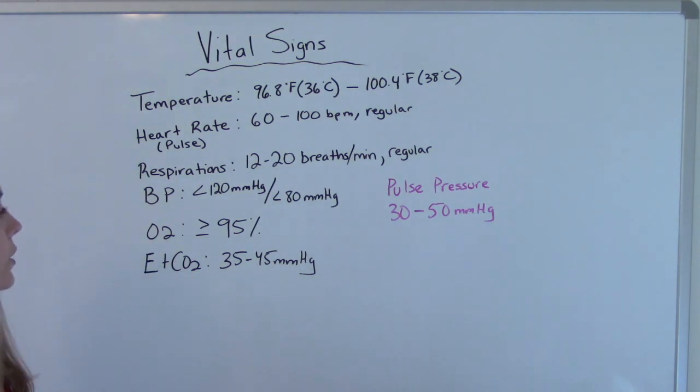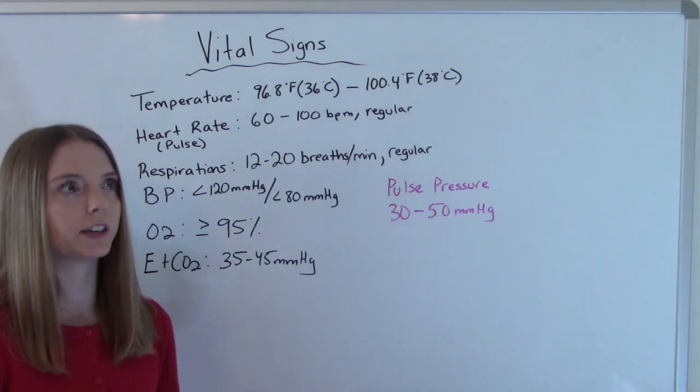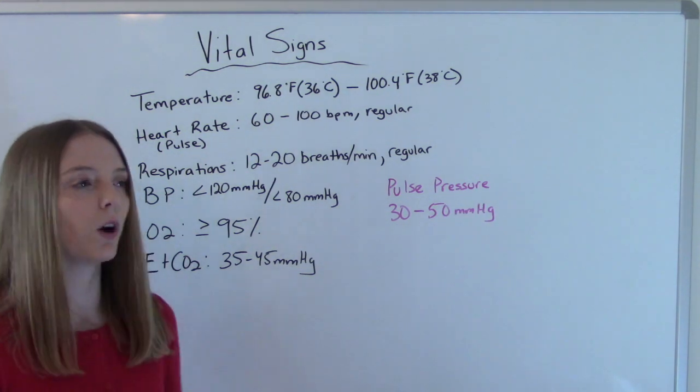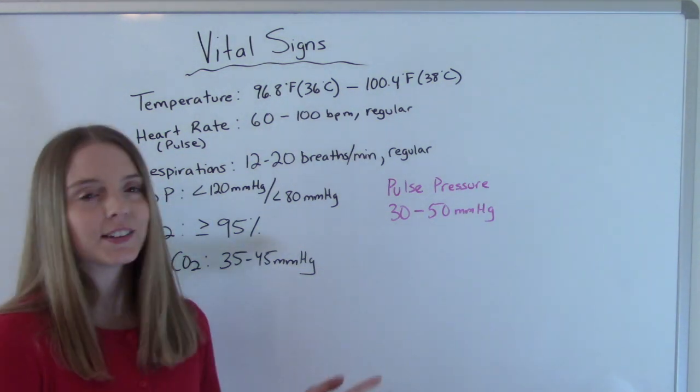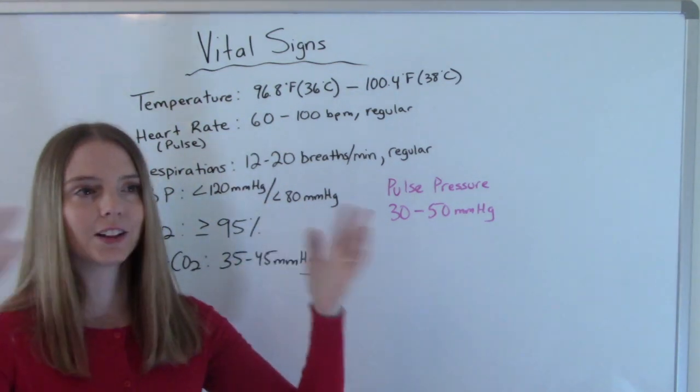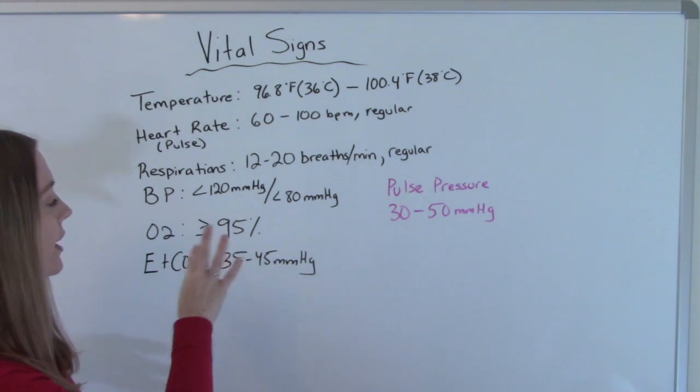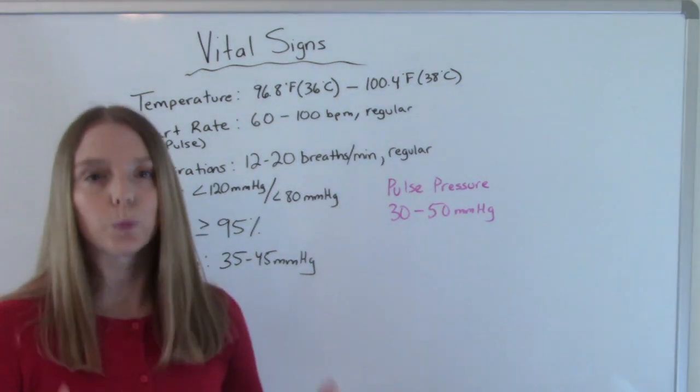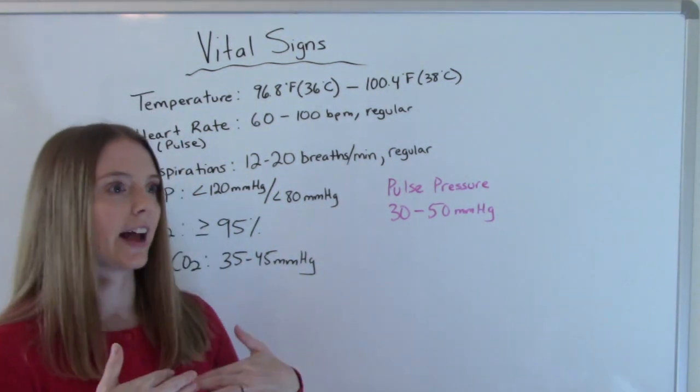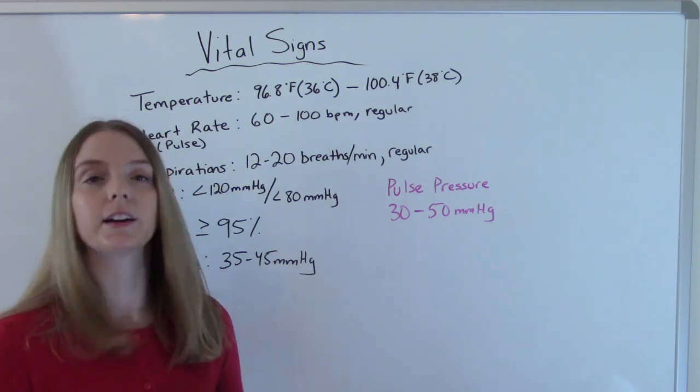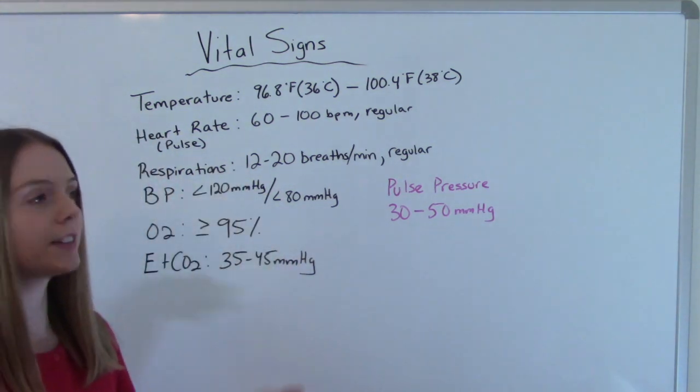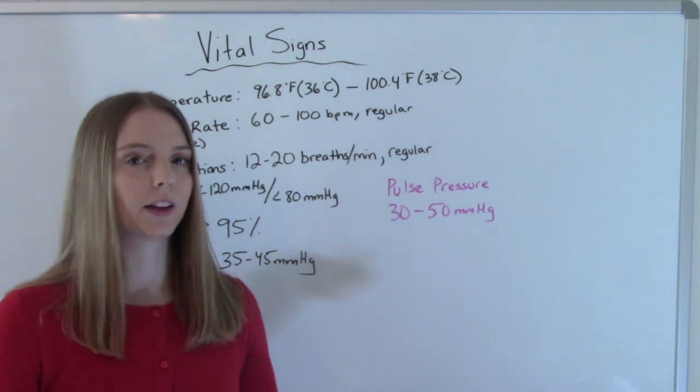Our O2 should be greater than 95%. And we want to say how our patient is receiving oxygen. So if they're not on any sort of assistive device like nasal cannula or a non-rebreather or whatever, we're just going to say greater than 95% on room air. If they're having oxygen administered, supplemental oxygen, we're going to say 97% on 2 liters nasal cannula.